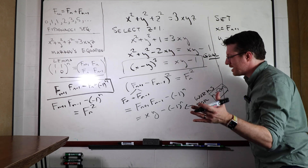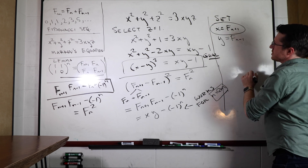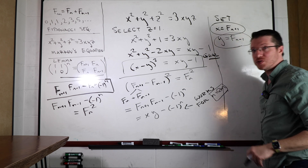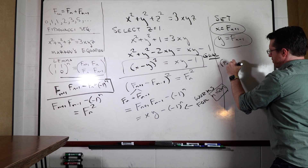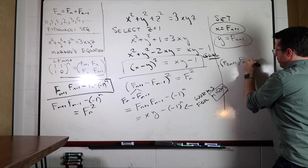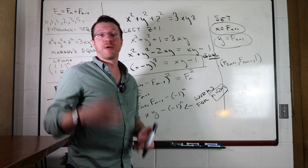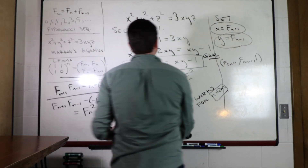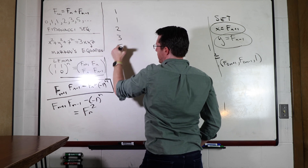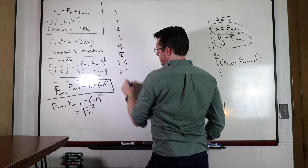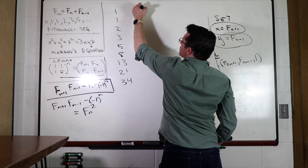Let's look at some examples. Writing out the Fibonacci sequence: 1, 1, 2, 3, 5, 8, 13, 21, 34. The initial solution was (1, 1, 2). Our solutions keep z equal to 1 and pick x and y from odd-indexed Fibonacci members.